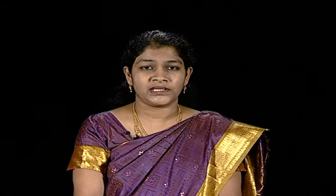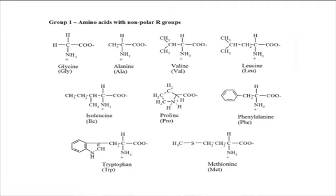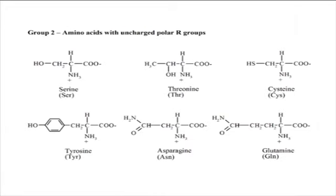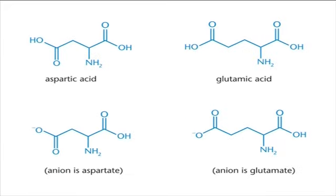The next classification of proteins is based on structure of amino acids. The side chains are the deciding factors for intra- and intermolecular interactions in proteins. Amino acids can be classified as: amino acids with non-polar, uncharged side chains — examples are glycine, alanine, valine, leucine, isoleucine, proline, phenylalanine, tryptophan and methionine; amino acids with uncharged polar side chains — examples are serine, threonine, cysteine, tyrosine, asparagine and glutamine; amino acids with positively charged (basic) side chains — examples are histidine, lysine and arginine; and amino acids with negatively charged (acidic) side chains — examples are aspartic acid and glutamic acid.